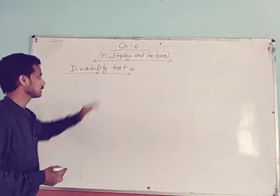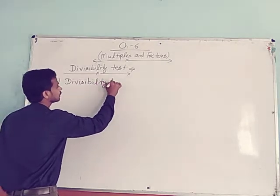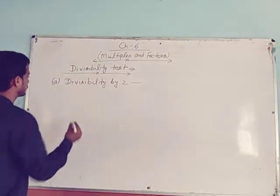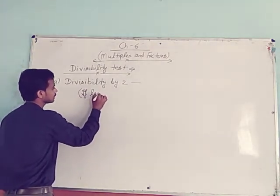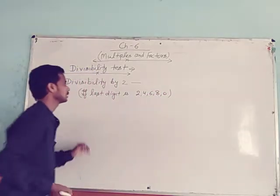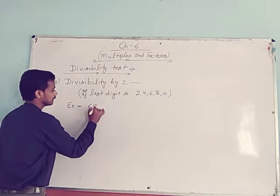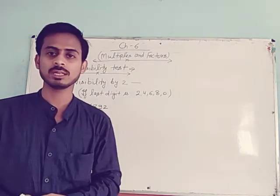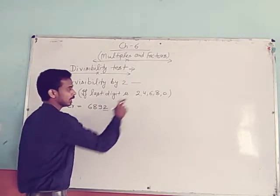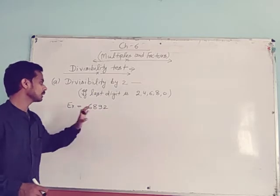Next topic is the divisibility test. First, divisibility by 2. How can you find whether a number is divisible by 2 or not? If the last digit is 2, 4, 6, 8, or 0, then the given number is divisible by 2. See the example: 6892. The last digit is 2, so this number is divisible by 2.